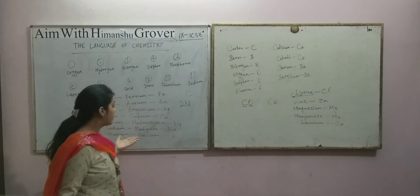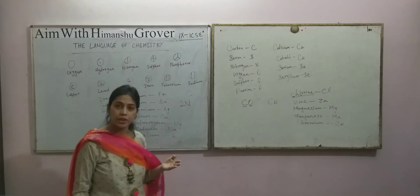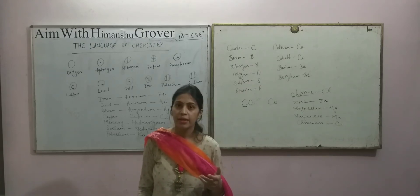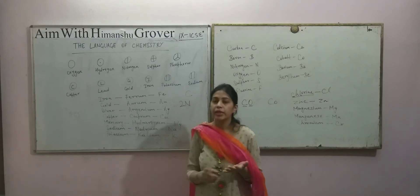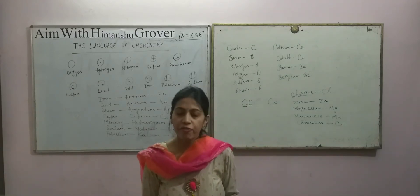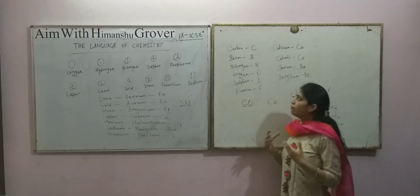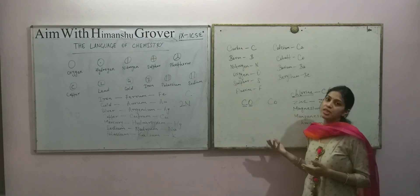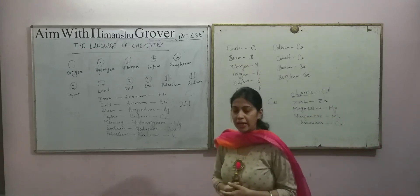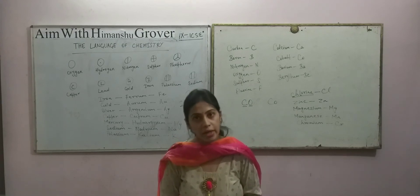For example, the name hydrargyrum — 11 letters — is represented by only two letters, Hg. The use of symbols makes the study of chemistry more meaningful and universal. Mercury has different names in different languages — Mercury in English, hydrargyrum in Latin, a different name in Sanskrit — but the symbol Hg is recognized by chemists in every country, making chemistry truly universal.